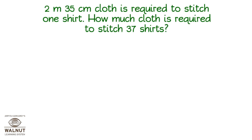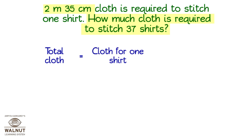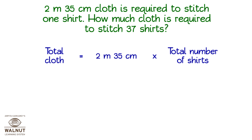2 metres 35 centimetres of cloth is required to stitch 1 shirt. How much cloth is required to stitch 37 shirts? What do we have to find out? The total cloth required. What do we know? We know the cloth for one shirt and the number of shirts. We know the cloth for one shirt and we have to find the cloth for many shirts. This is obviously a multiplication problem. So, the total cloth needed is the cloth for one shirt multiplied by the number of shirts. The cloth for one shirt is 2 metres 35 centimetres, and there are 37 shirts.